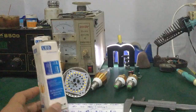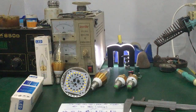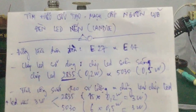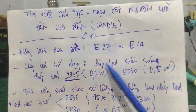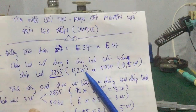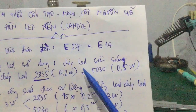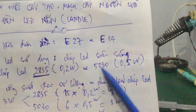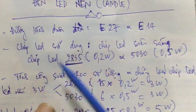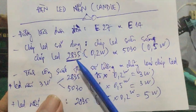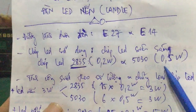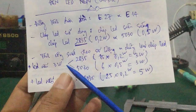Tiếp theo mình sẽ tìm hiểu về loại chip LED mà bóng đèn LED nến hay sử dụng. Ở đây nó sử dụng 2 loại chip LED siêu sáng: thứ nhất là chip LED 2835, công suất của chip này là 0,2W; ngoài ra còn sử dụng chip LED 5030, công suất là 0,5W. Trong video trước mình đã nói về cách tính công suất đèn dựa vào số lượng và loại chip LED.